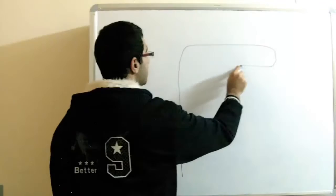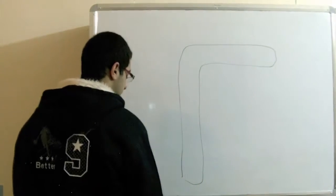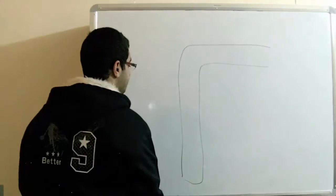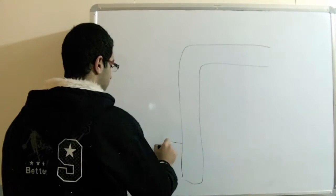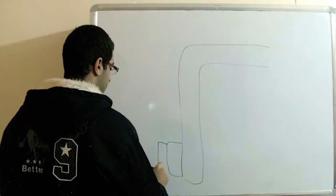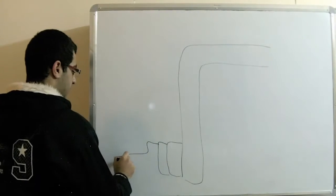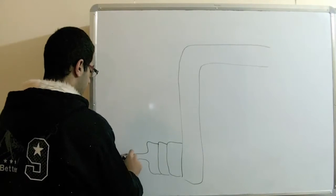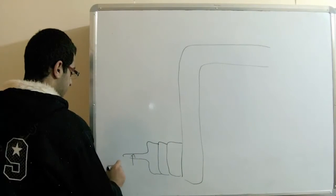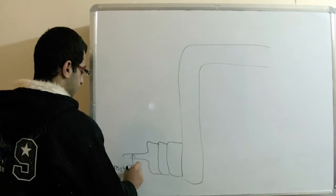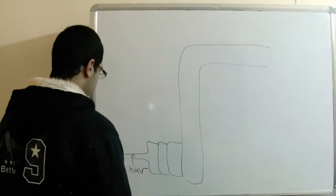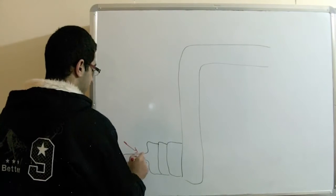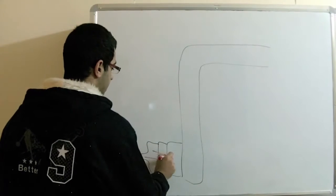So if this is the xylem here — these are the root cells. This is the root hair. And the water current is like this — this is the water current.